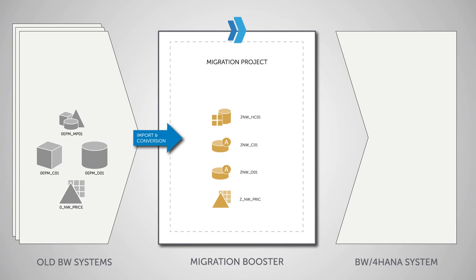This will save you a lot of time because it runs fully automatically. And that's not all — you cannot only rename objects but also adapt all usages in other objects with just one click. This way you maintain the consistency of your data models. A mass renaming can be conveniently prepared in an Excel list and then imported into the Migration Booster.